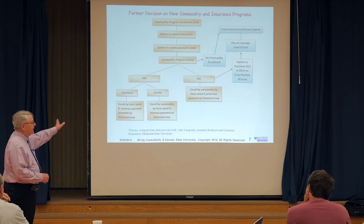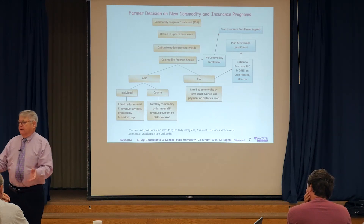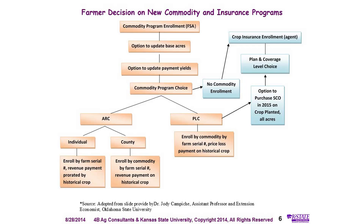My point is that something could drive that yield really low at the farm level and not drive the county yield low. You might think you'd be better off with the individual guarantee, but not necessarily. The reason is that ARC has that 10% stop loss — you can't get more than 10% of the expected revenue. So all it takes is a little bit of a yield decline, and you've maxed out the payment. Your payment is maxed out at 10%, and you're only going to get paid on 65% of the base acres.